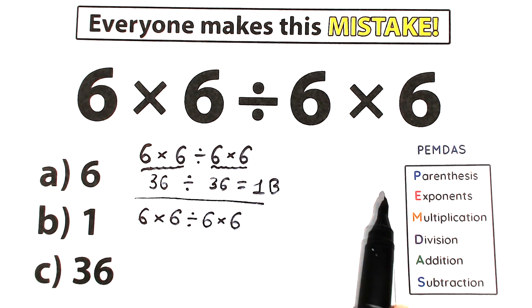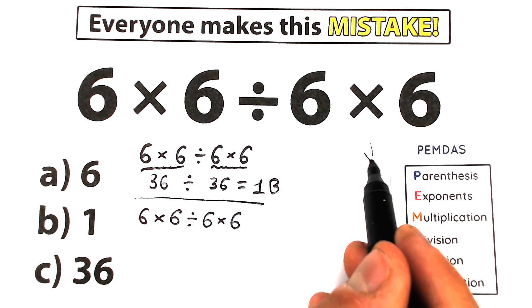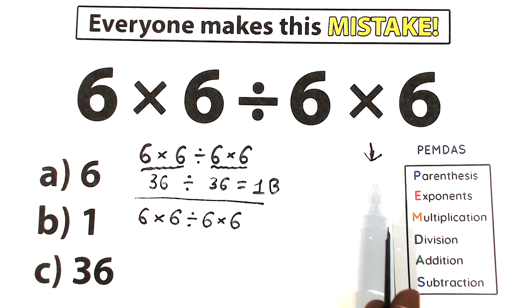PEMDAS works from the top to the bottom. So on the top, the highest priority. On the bottom, the lowest priority. And of course, the first step is parentheses. In our case, we don't have parentheses, so it's really great.